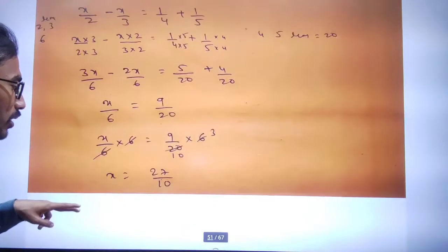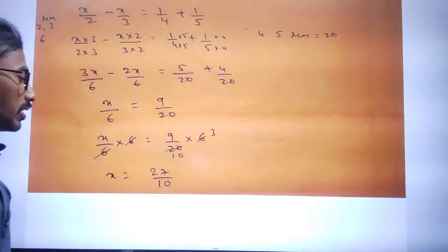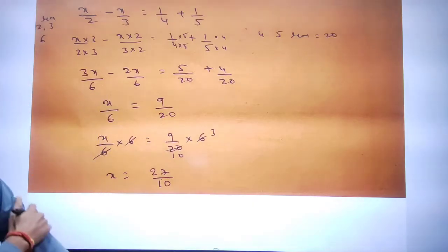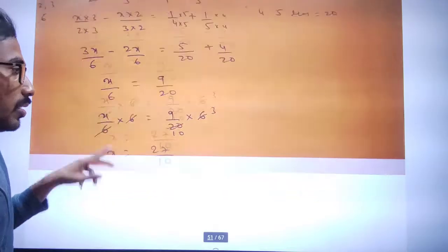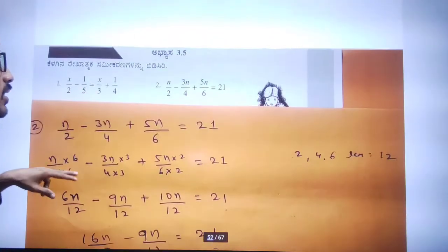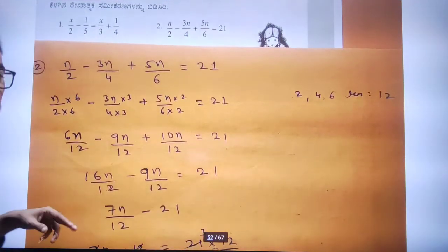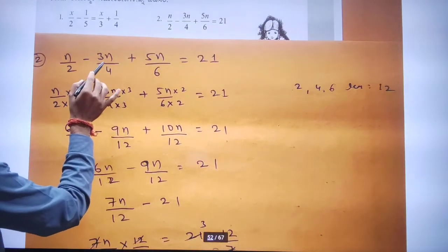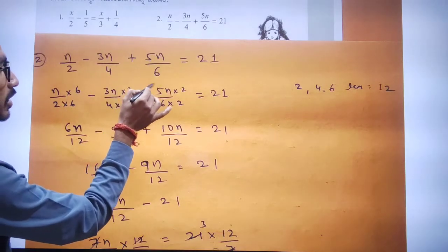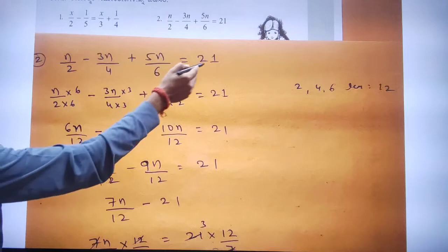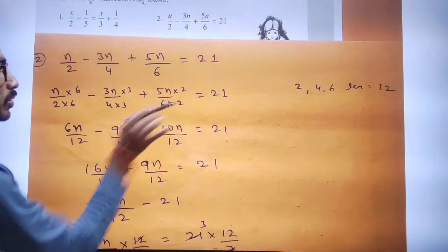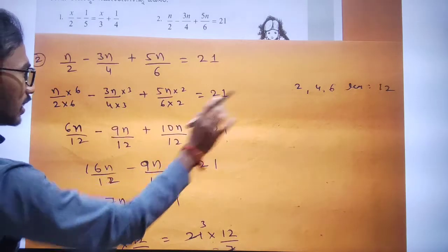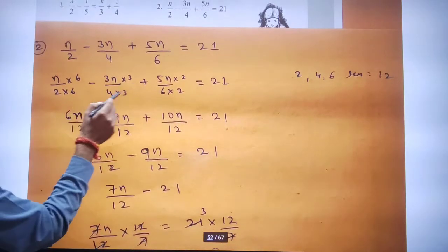In the same way, we are applying the same method. I will note that n divided by 2 minus 3n divided by 4 plus 5n divided by 6 is equal to 21. So, n is equal to 1, meaning L is equal to R.